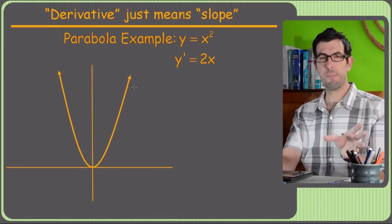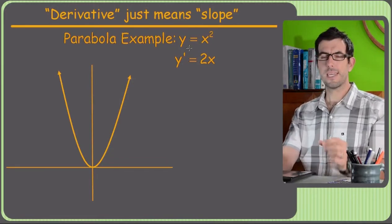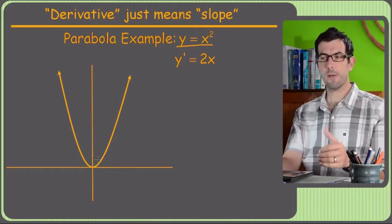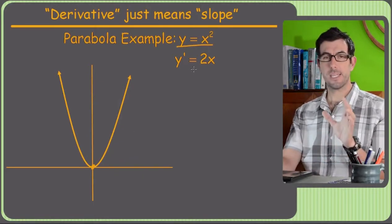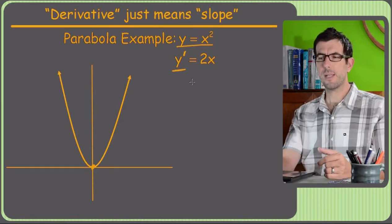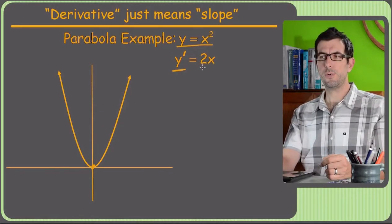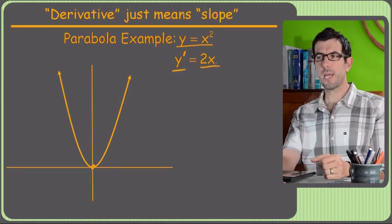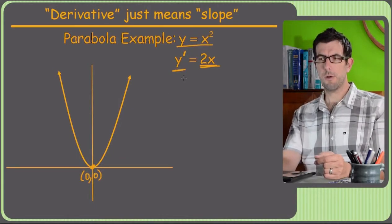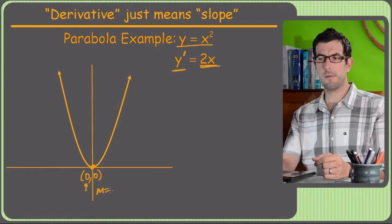So that was estimating a slope. We're going to use derivatives to actually calculate the slope specifically for any given point on the curve, and that's where we'll use that big nasty limit equation. The parabola we were looking at was y equals x squared — just your classic parabola with a vertex at the origin. I'll tell you that the derivative, y prime, equals 2x. So the slope at any given point along this parabola is just 2 times the x-coordinate. At the origin, plugging in zero: 2 times 0 is 0, so the slope is 0 at that point — which is what we estimated.